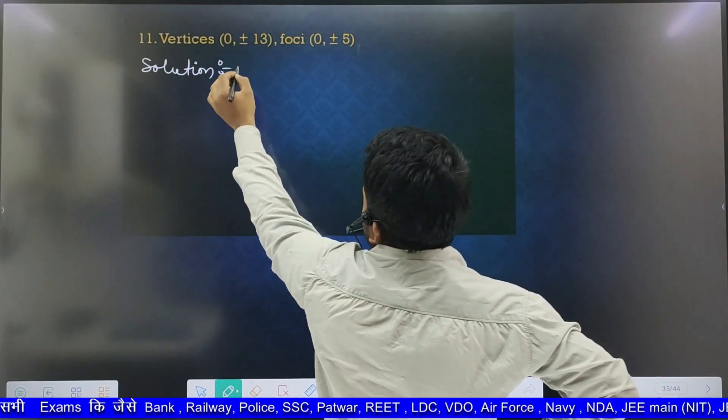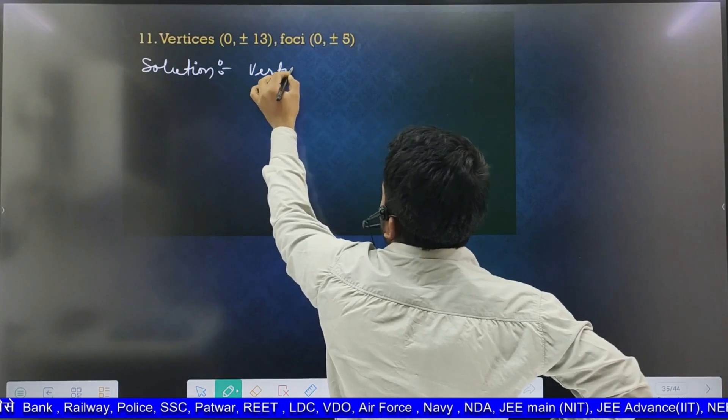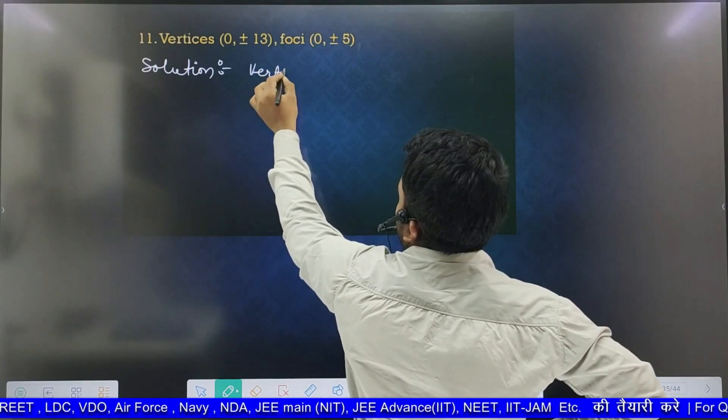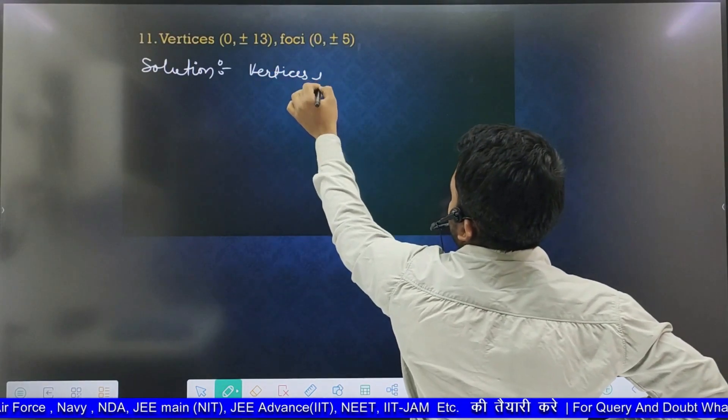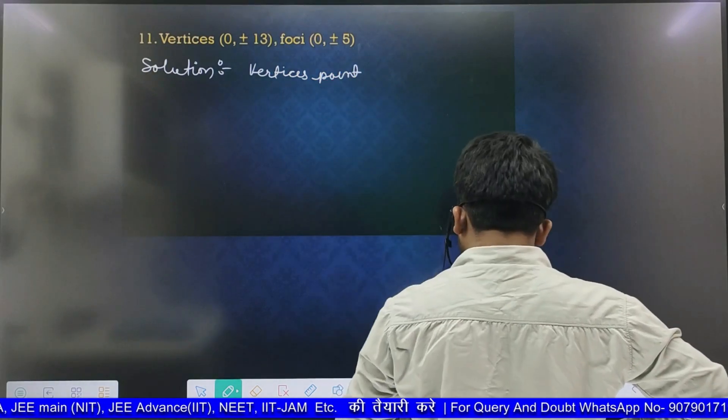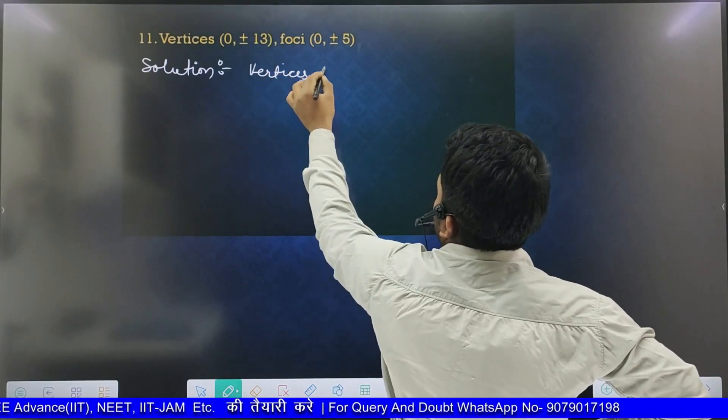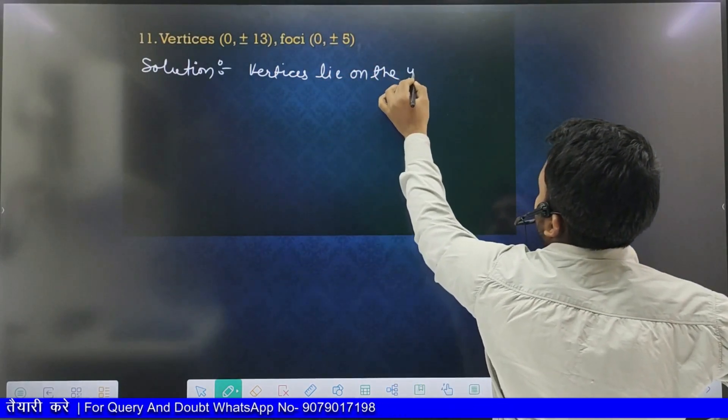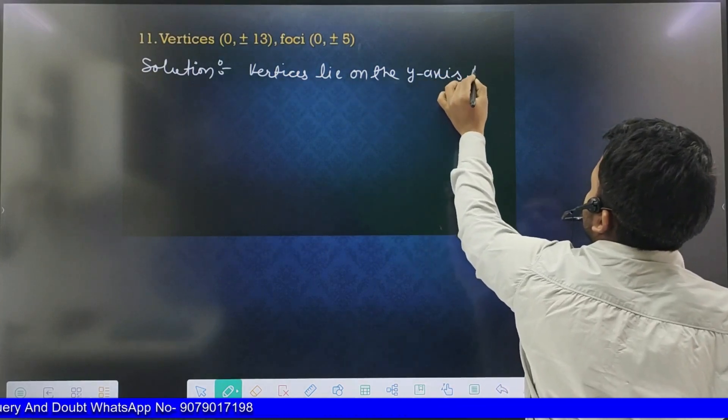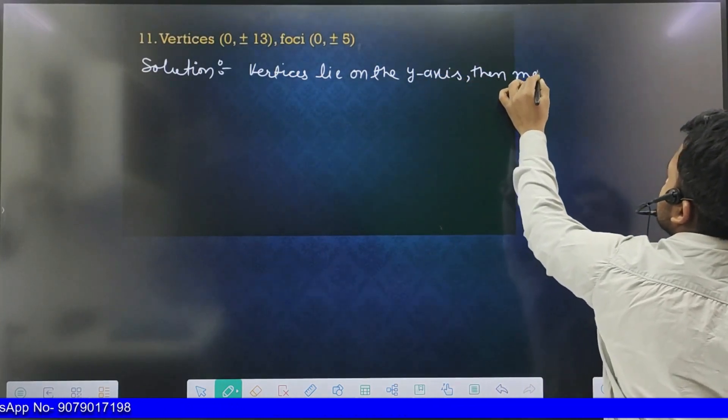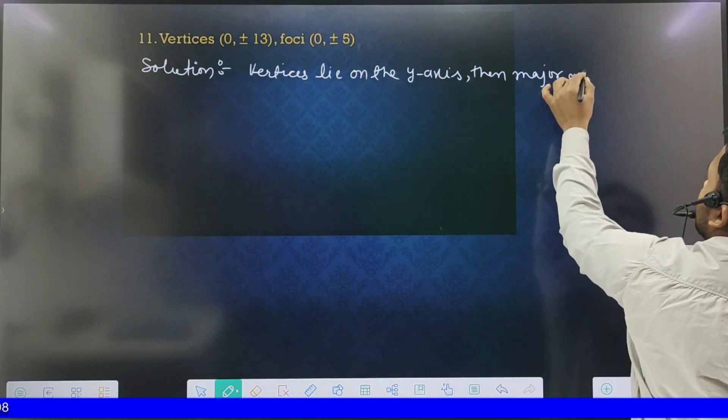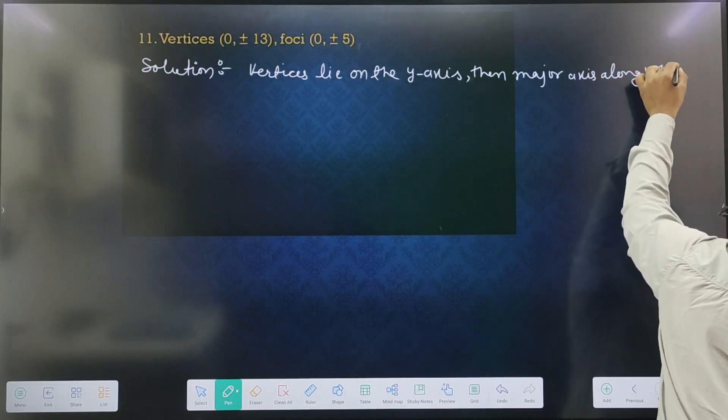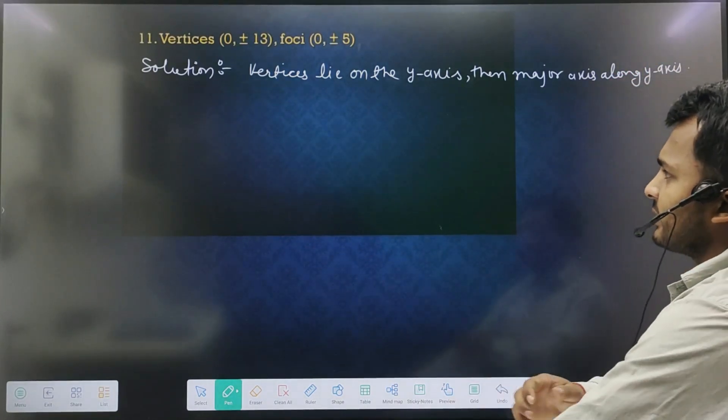What will come from here? Vertex, vertex. Where do the vertices lie? They lie on the y-axis. Then here you will see that the major axis, which one will be along the y-axis, right? I am right, right?